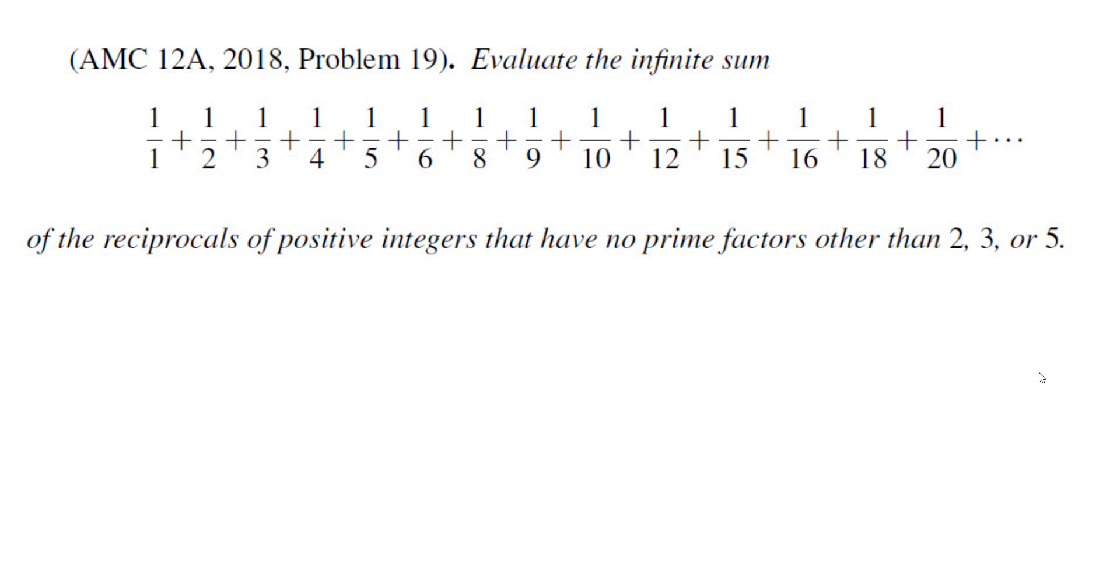So examples of the denominators are 1, 2, 3, 4, 5, 6, 8. So we don't include 7, we do not include 11, we do not include 13, we do not include things like 21 which is 3 times 7 and so on.